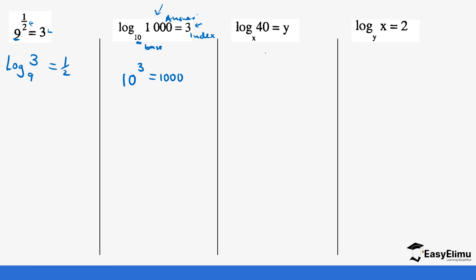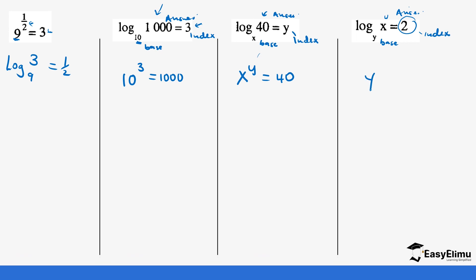Converting this into index notation as well: this is the base, this is the index, and this is the answer. So this means if you take x and power it to y you are going to get the result. In another case, this is the base, two is the index or the power, and x is the answer. This means that if you take y and power it to two, it gives you x.